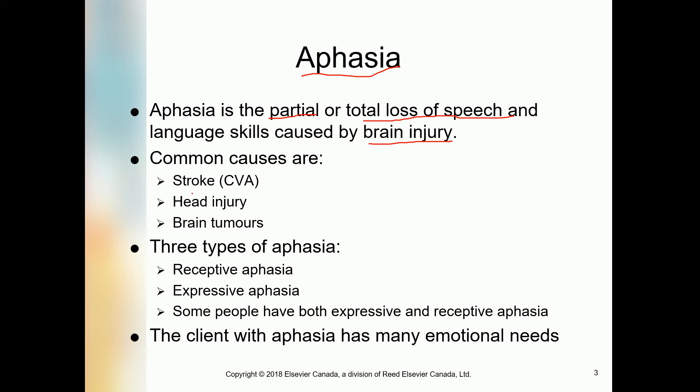Common causes of aphasia are stroke — when people have a cerebrovascular accident (CVA), which is another name for stroke — as well as head injury and brain tumors. As already discussed, there are two types of tumors that can develop in the brain: malignant (cancerous) and benign (non-cancerous). These types of tumors also make speech and language dysfunctional.